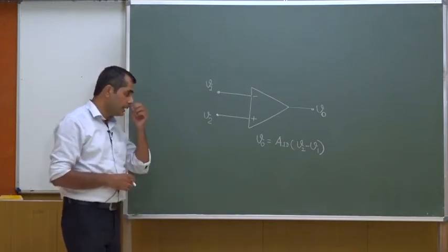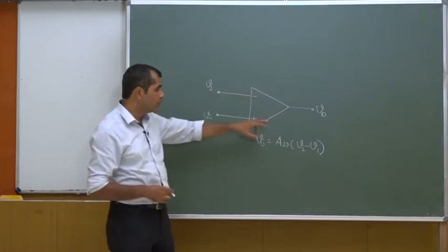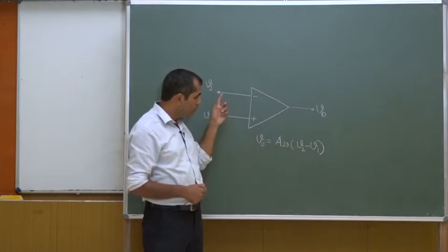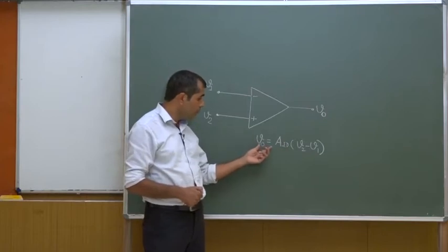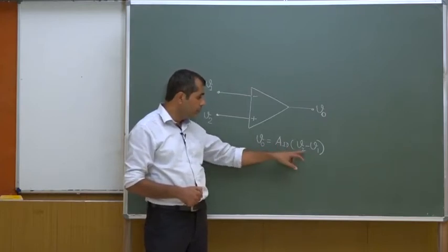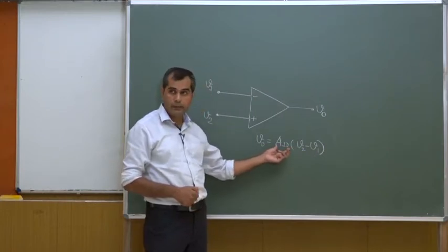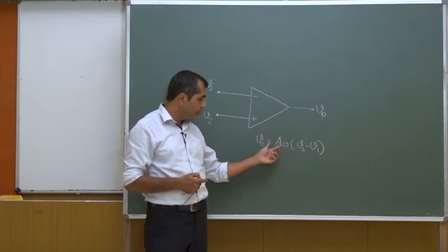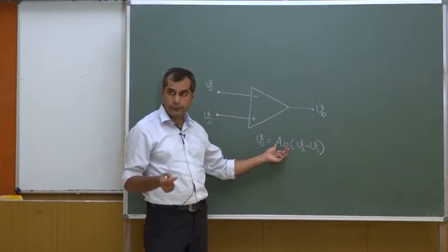For an ideal operational amplifier, the output voltage V_out can be related with the input voltages V1 and V2 as follows: V_out equals A_id times (V2 minus V1), where A_id is the open loop gain. Earlier I was writing A, but now I have written A_id for a specific purpose that will become clear shortly.